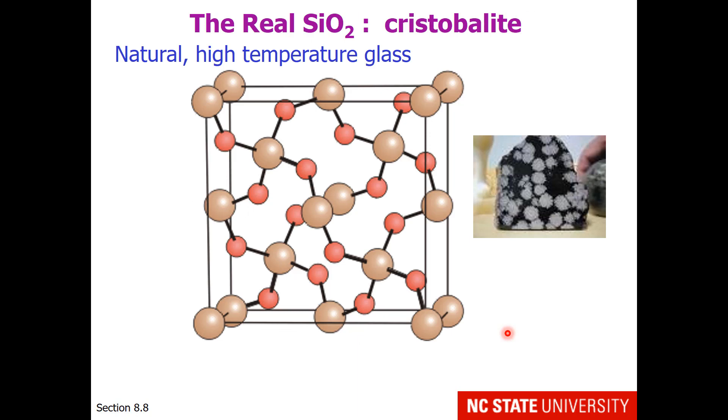So that brings us back to silicon dioxide. Sand is one form of silicon dioxide. Another different type of unit cell, but with the same molecular formula, is Christobolite. This is natural high-temperature glass. And here's a picture where the high-temperature glass is these white regions, and the black regions are igneous rock. So volcanoes erupt, the lava goes down to the beach, and as it solidifies, it also creates this glass from the sand.